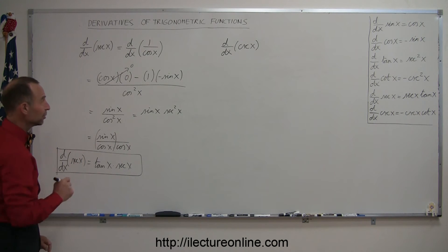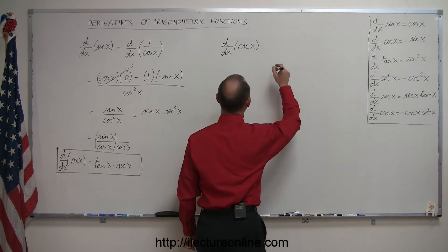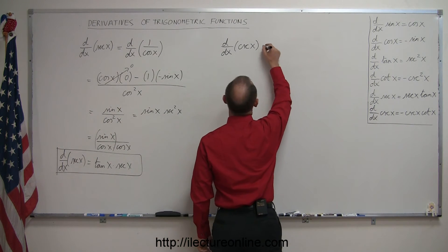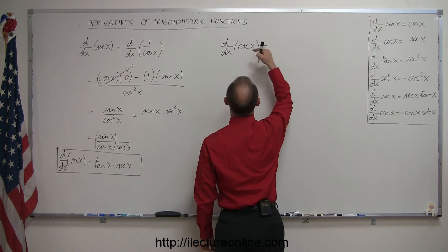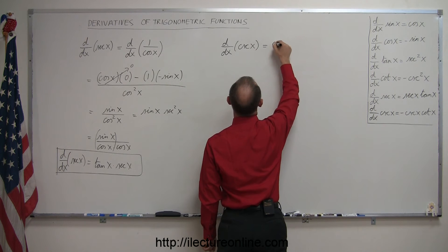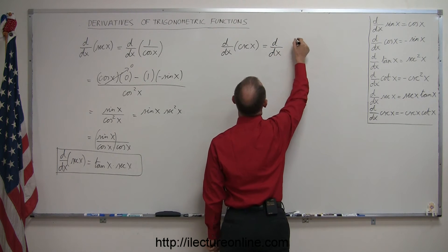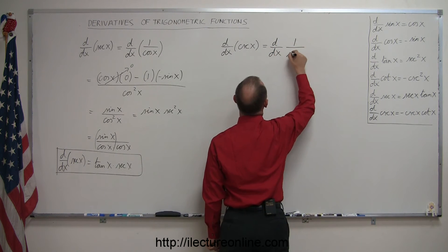Now let's do the same thing for the cosecant of x. The d/dx of cosecant of x is the same as the derivative with respect to x of 1 over the sine of x.